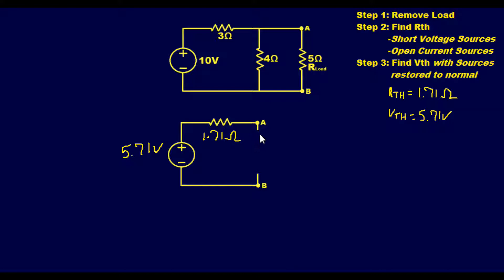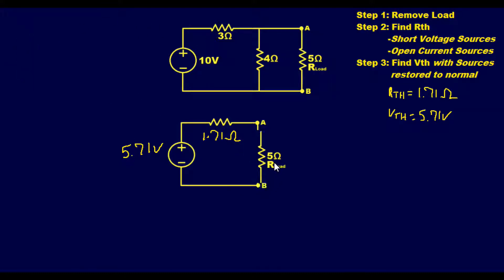When the engineer reinstalls his load resistance — pasting the 5 ohm resistor back in — he can find the actual current value through the whole circuit and see how much current is running through the 5 ohm load. If he swaps it for a 15 ohm load, or 100 ohm, and so on, he can determine the actual current flowing through it. That finishes the simple example.